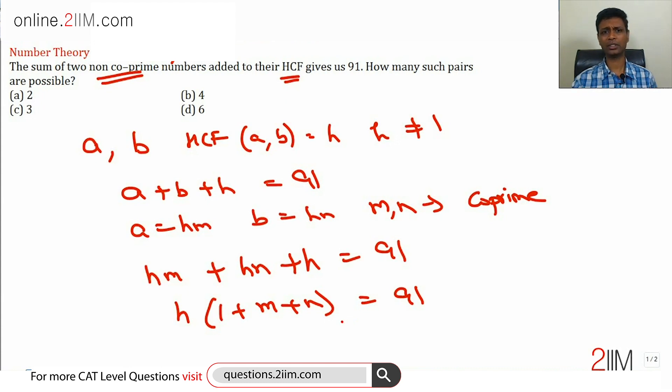Think about this. 91 is not prime. 91 is 7 into 13. So 91 can be written as 7 into 13, 13 into 7, 1 into 91, 91 into 1. Four different ways of writing it.